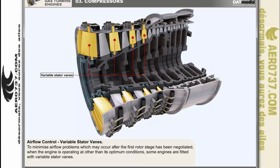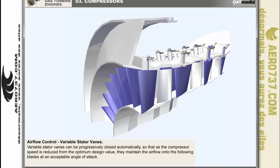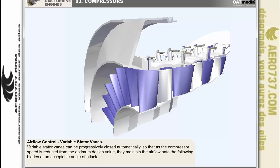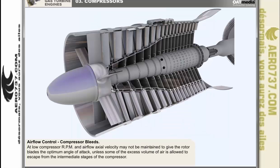After the first rotor stage has been successfully negotiated, the airflow may still have problems further down the compressor when the engine is operating at other than its optimum conditions. To minimize those problems, some engines are fitted with Variable Stator Vanes, which can be pivoted automatically so that as compressor speed is reduced from the optimum design value, they are progressively closed to maintain the airflow onto the following rotor blades at an acceptable angle of attack. In some engines at low compressor RPM, some of the excess volume of air must be allowed to escape from the intermediate stages of the compressor.